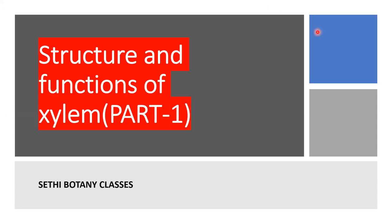Hello friends, welcome to SETI Botany Classes. In this video we will discuss about structure and functions of xylem. Xylem is part of vascular tissue. Vascular tissue is made up of phloem and xylem. Phloem helps in conduction of nutrients and xylem helps in conduction of water and minerals.